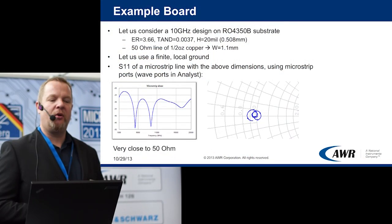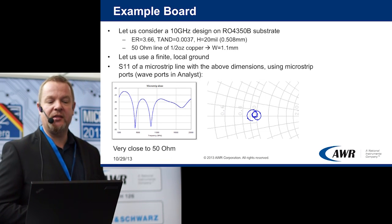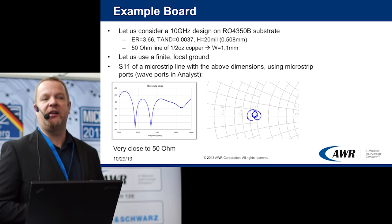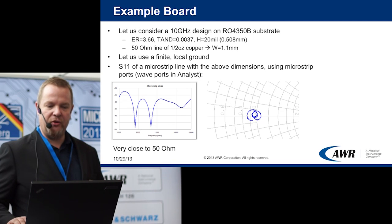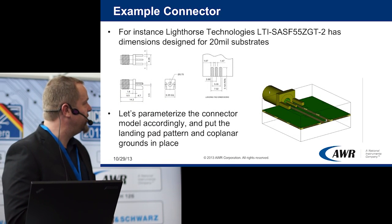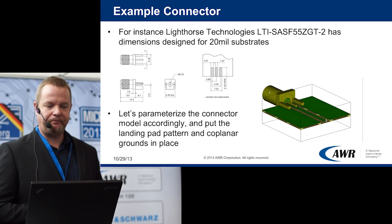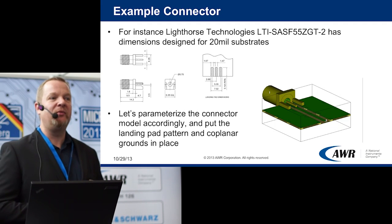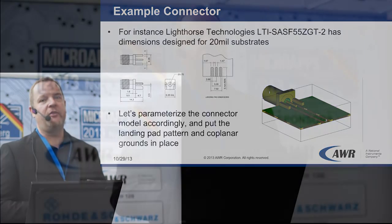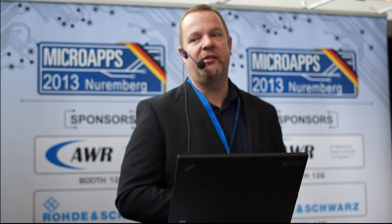Our example board is Rogers 4350B substrate, and we target a design at 10 GHz. We use a finite local ground and pick from a catalog — for instance, a Lighthouse Technologies connector made for that substrate thickness. From the data sheet, we just pick the parameters and parameterize our 3D model accordingly. The manufacturer also has a recommendation for landing pads, so we just make that landing pad pattern onto our board.